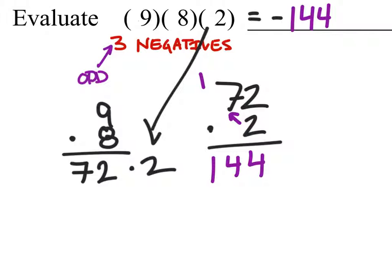So in the final answer, though, it becomes a negative because we knew that the value was negative because there were 3 negatives in the problem. All right? So there you have it.